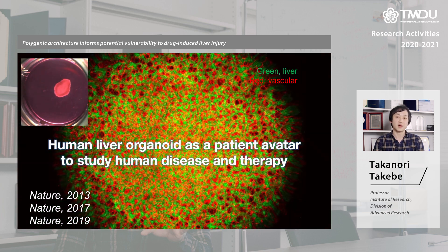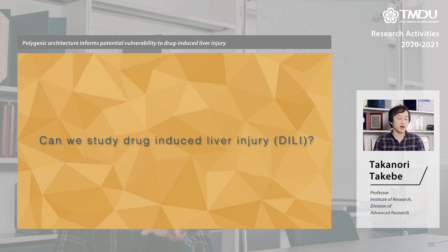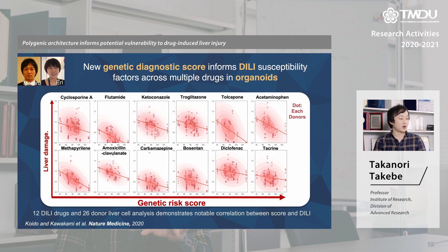The question we had for this study is: can we model the drug-induced side effects, or drug-induced liver injury (DILI)? To tackle this problem, Masaru and Eri collaboratively developed a very exciting approach to predict the potential toxicity or side effects. We have invented a new genetic risk score formulation.